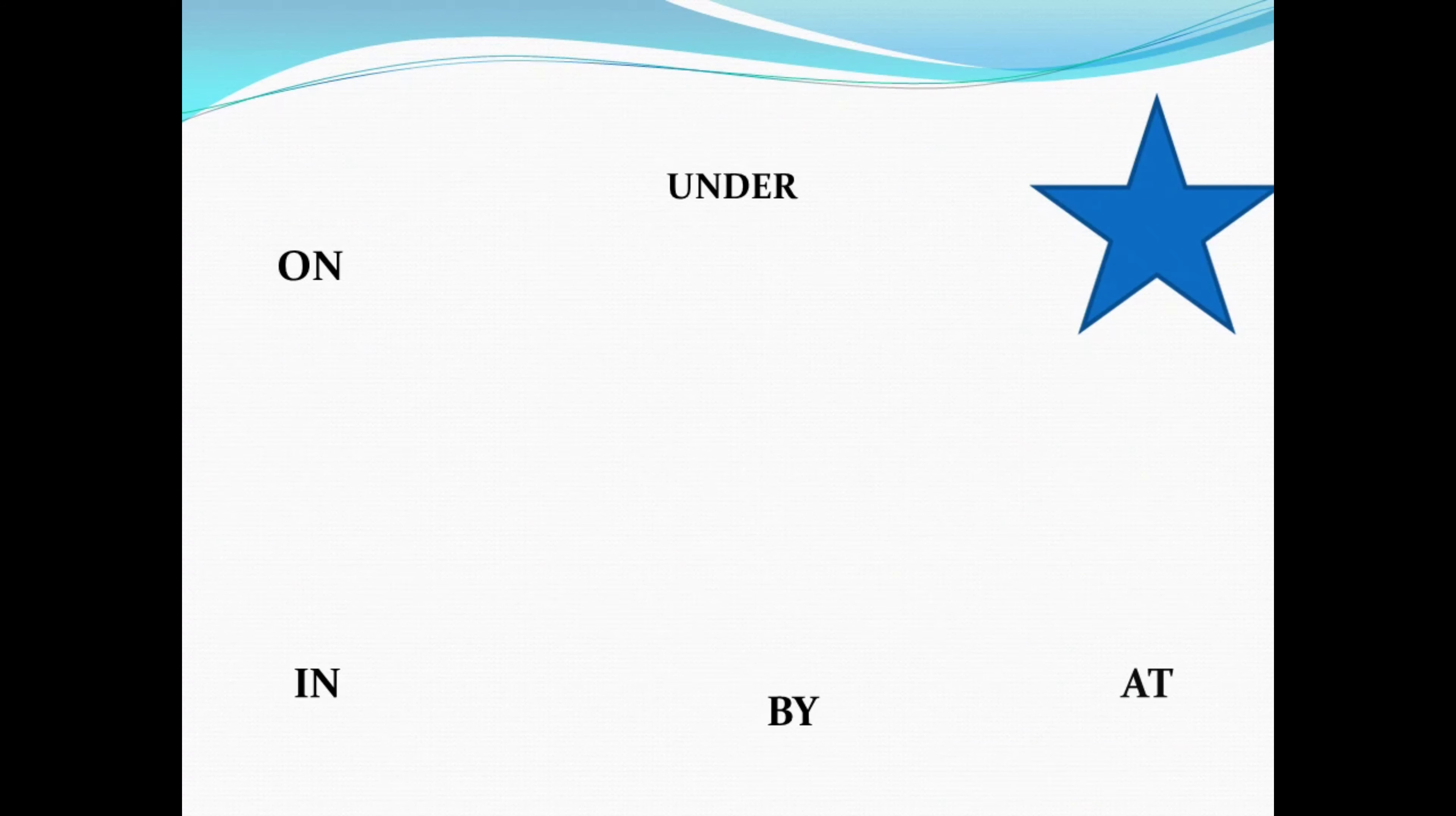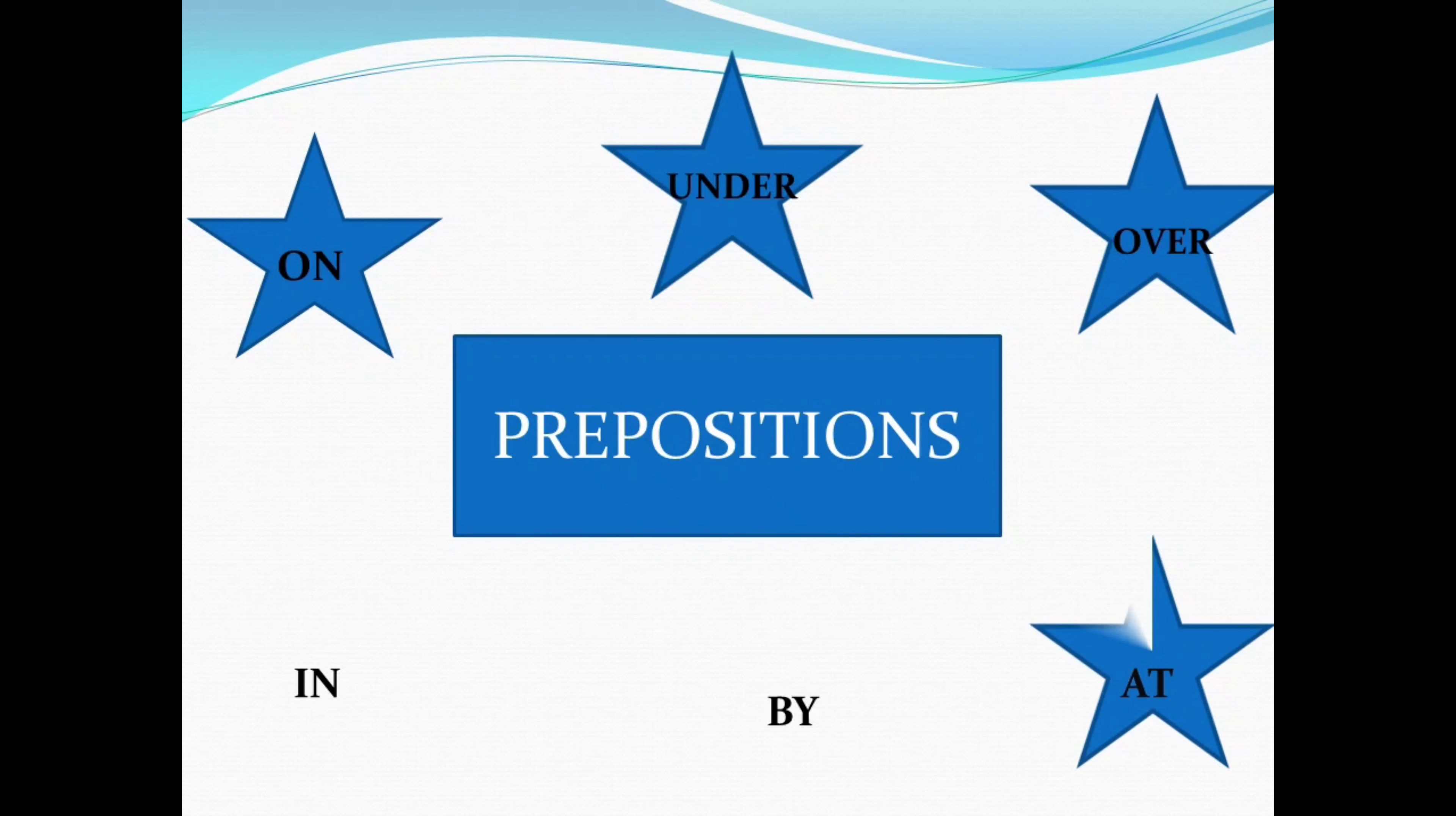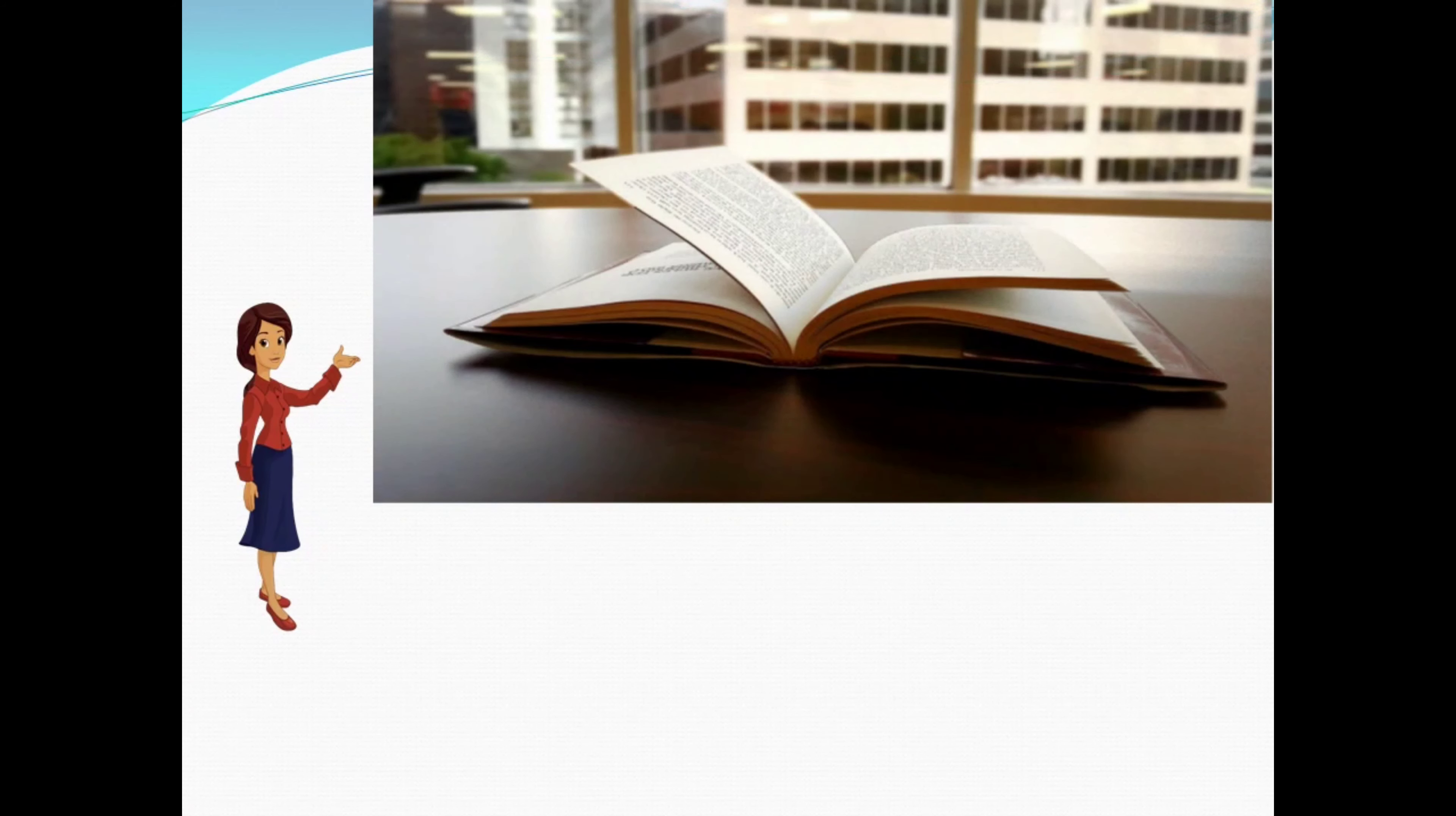So here we can see there are various kinds of prepositions. The first one is on, the second one is under, third one is over, fourth one is at, then by, then in.